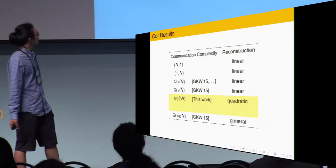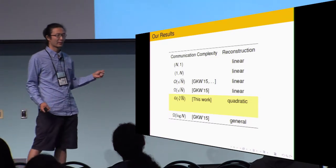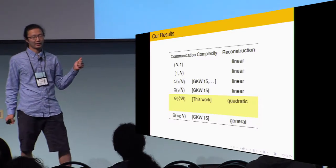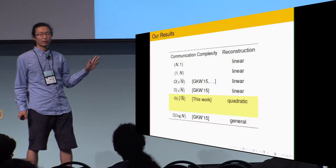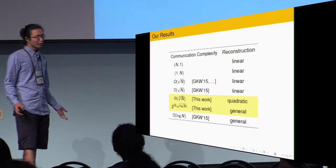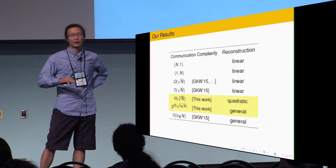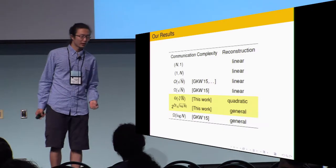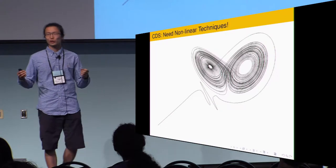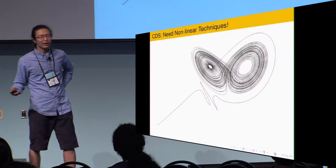So, here comes our works. First, we present CDS with cube root n reconstruction, cube root n communication complexity, and the quadratic reconstruction. This is also tight in the sense that cube root n is optimal for quadratic reconstruction. We get other constructions such that this time we have subpolynomial communication complexity. But as the trade-off, the reconstruction is more complicated. So, you should get the idea now that we need nonlinear techniques, but where are they coming from?